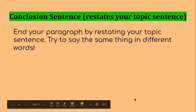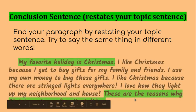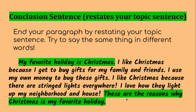The last sentence in your 2.6 is your conclusion sentence, which restates your topic. Notice how it's highlighted in green just like the topic sentence — because you're going to restate your topic sentence. Try to say the same thing in different words. My topic sentence is: My favorite holiday is Christmas. And then down here are the reasons, so I'm restating that Christmas is my favorite holiday just to wrap it all up: These are the reasons why Christmas is my favorite holiday.